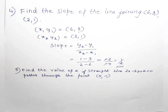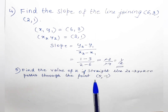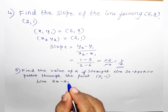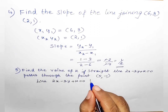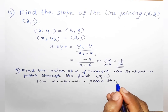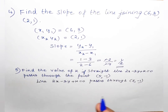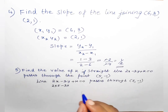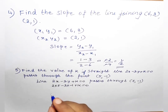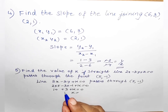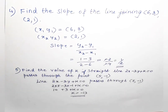Problem 5: find the value of k if the straight line 2x - 3y + k = 0 passes through the point (5, -1). Substituting x = 5 and y = -1: 2(5) - 3(-1) + k = 0, giving 10 + 3 + k = 0, so k = -13.